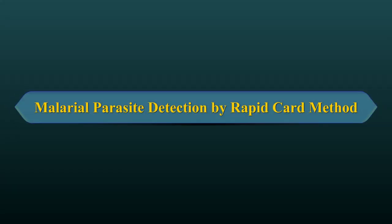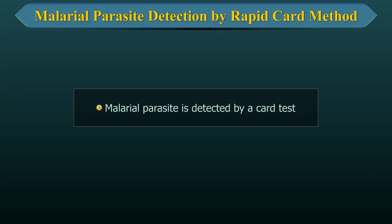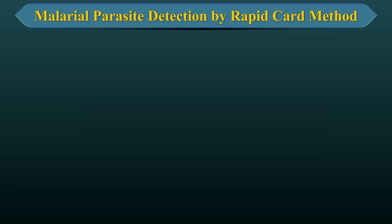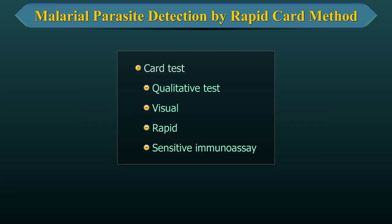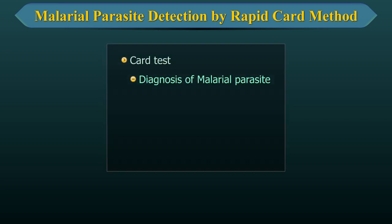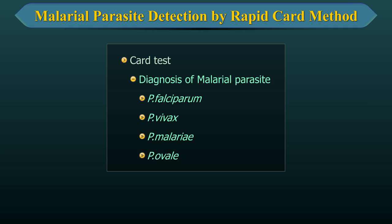Malarial Parasite Detection. Malarial parasite can be detected in the human blood by a card test. This qualitative test is a visual, rapid and sensitive immunoassay for diagnosis of various species of malarial parasite such as Plasmodium falciparum, Plasmodium vivax, Plasmodium malariae and Plasmodium ovale.